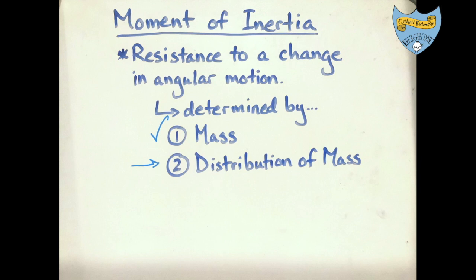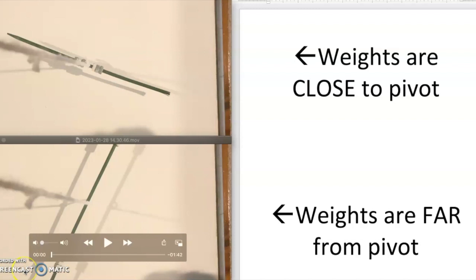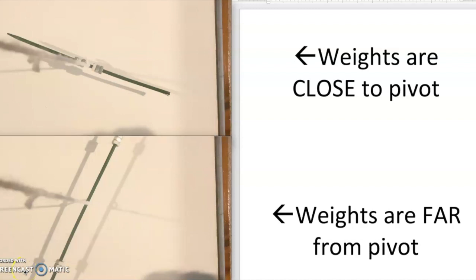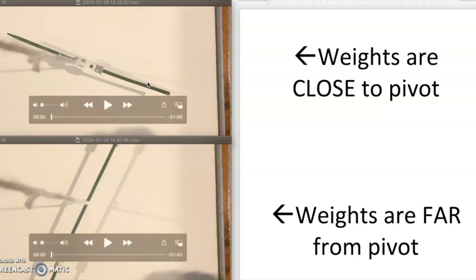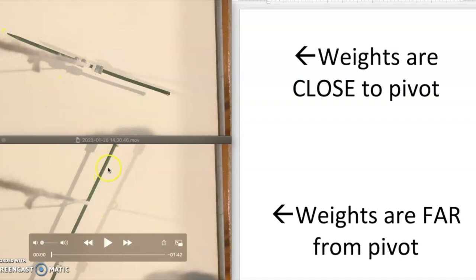But there's another factor that's a little harder to pin down: the distribution of that mass. In general, objects that have their mass located farther away from the pivot point are more difficult to rotate. To help demonstrate this, I made a couple of different setups using a wooden skewer and a few metal objects — one with the weights close to the pivot (the string coming straight up toward the camera), and one with the weights positioned farther from the pivot.